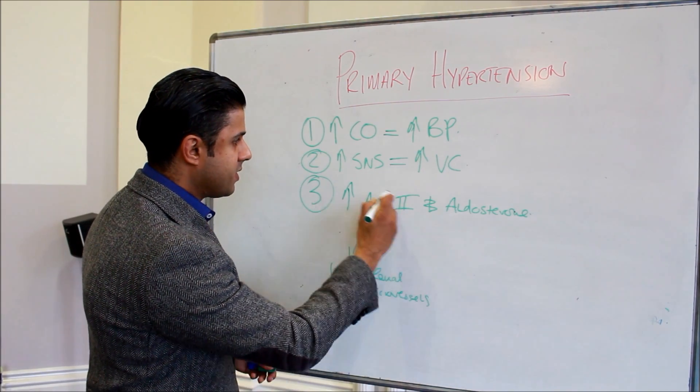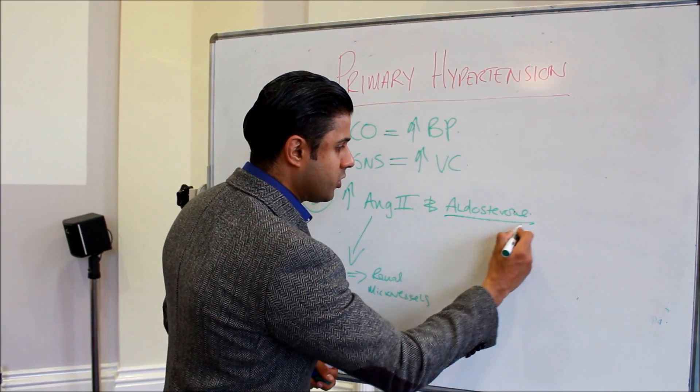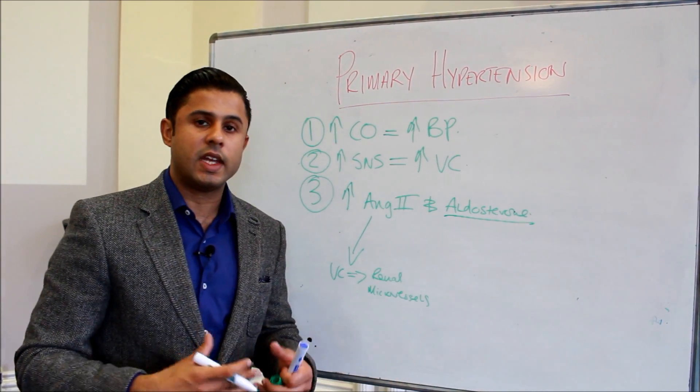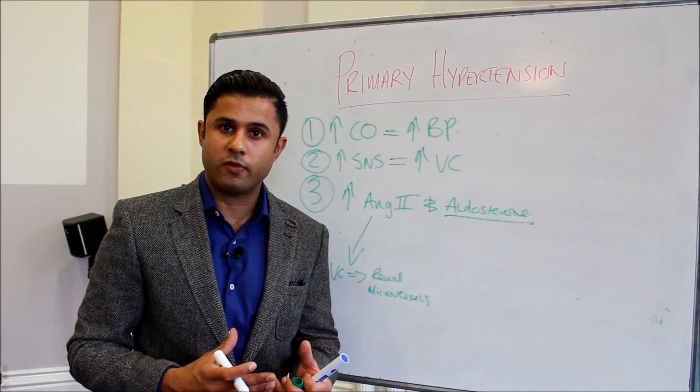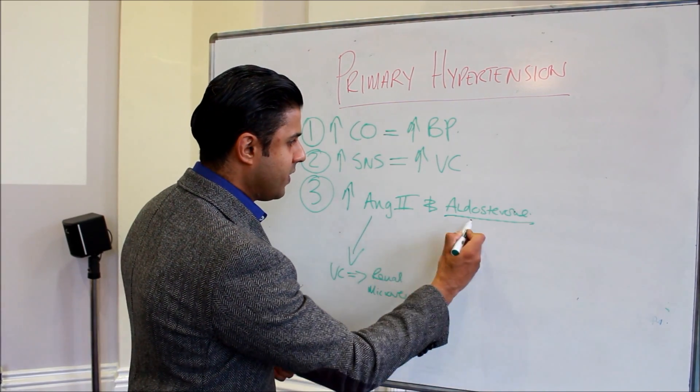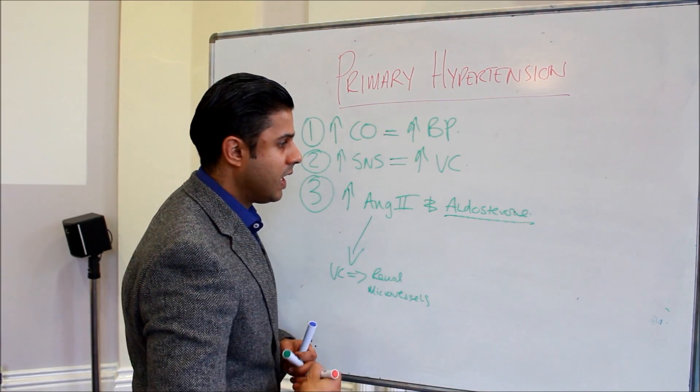This is as a result of angiotensin 2. We know that aldosterone actually causes the kidney to reabsorb water and salt from the renal tubular fluid. Both of these are increased two to three fold in obesity.